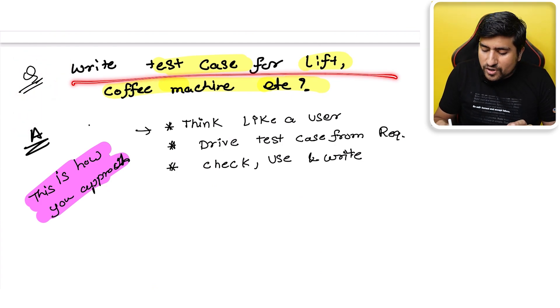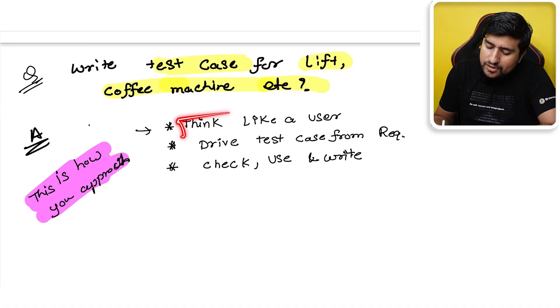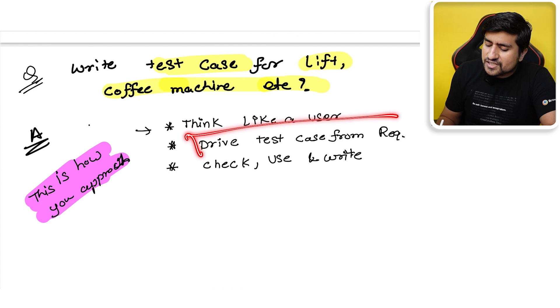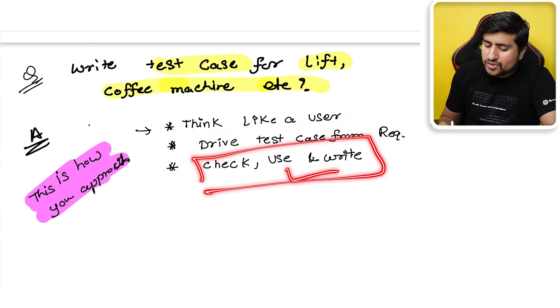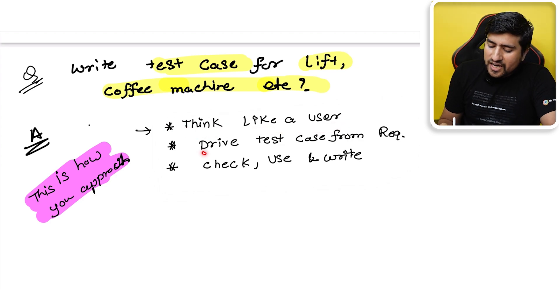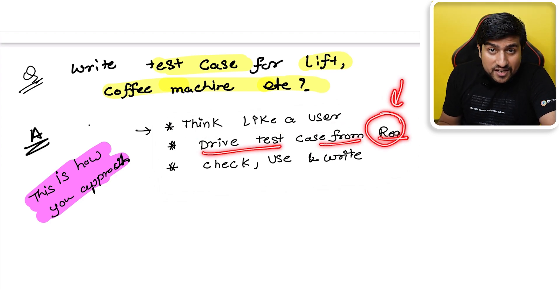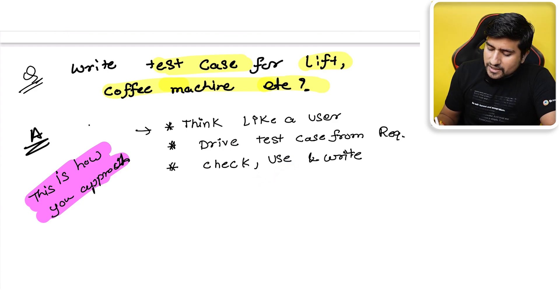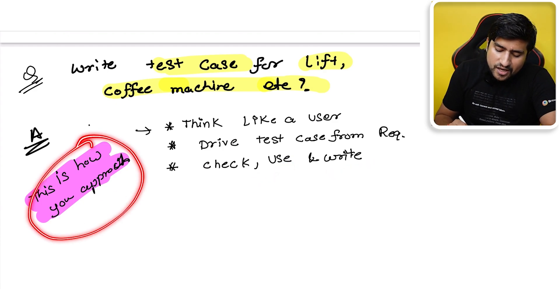The last question is: write test cases for a lift or a coffee machine. What they are looking for is that you think like a user. Drive test cases from the requirement, then check, use, and write — check the product, use the product, and then write the test cases. Remember these three principles whenever they ask you to write test cases for any object.